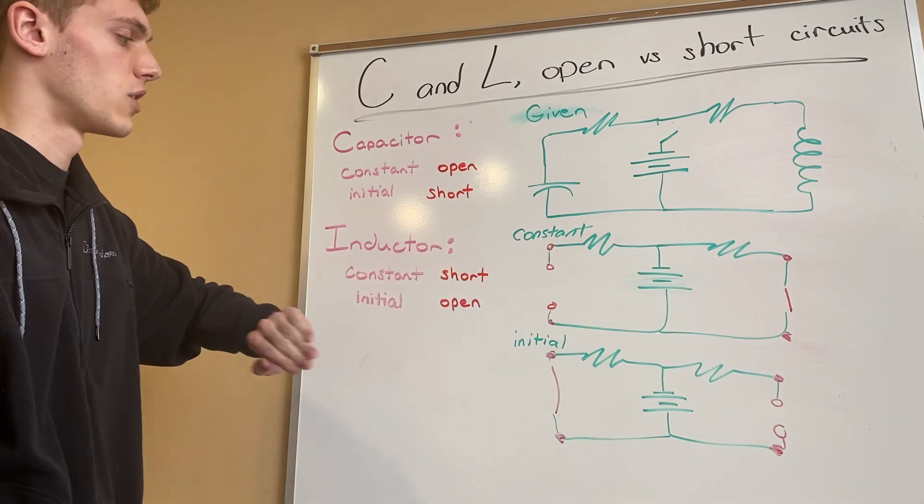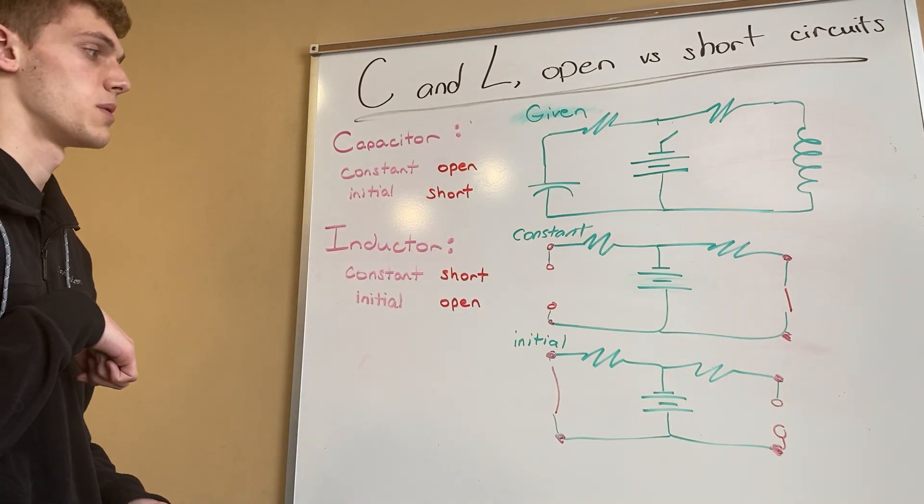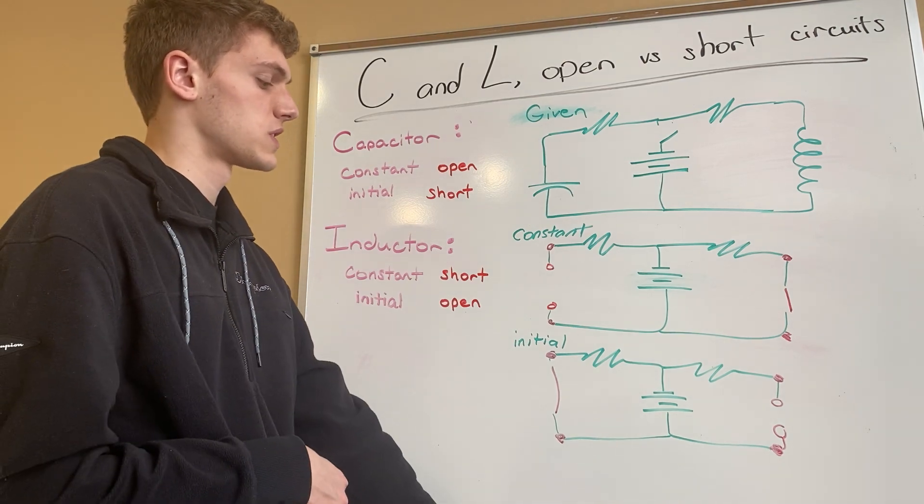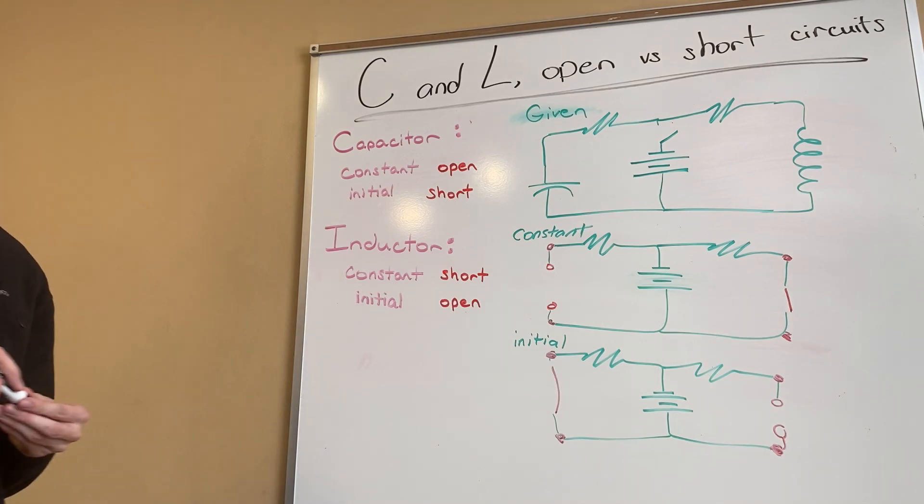Just find what we are actually looking for, what the question might be asking us, and always draw a constant current and an initial current to find those two extreme points. One of the equations that we'll end up dealing with both the constant and initial time value are when we're dealing with V of T and I of T.